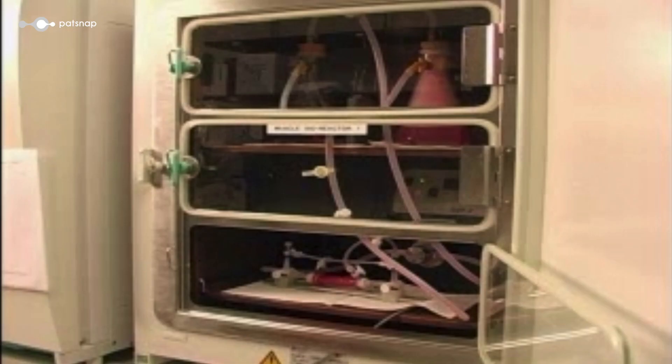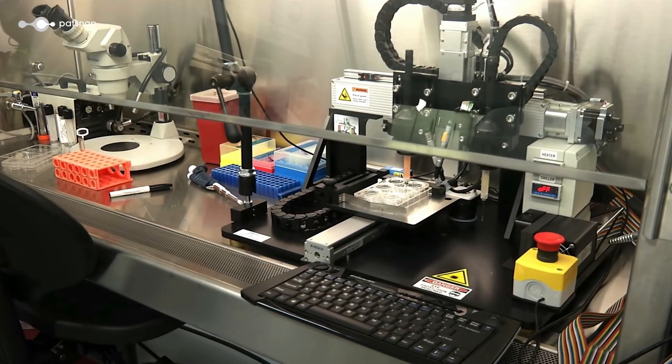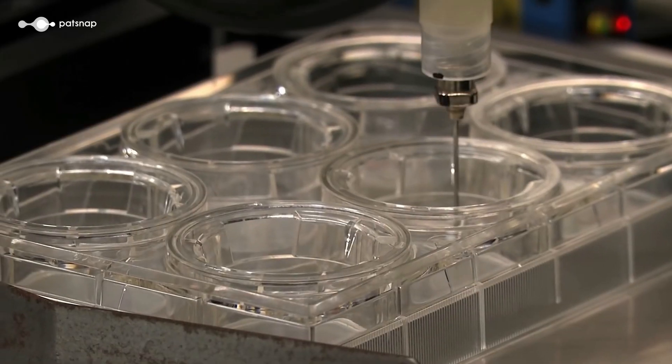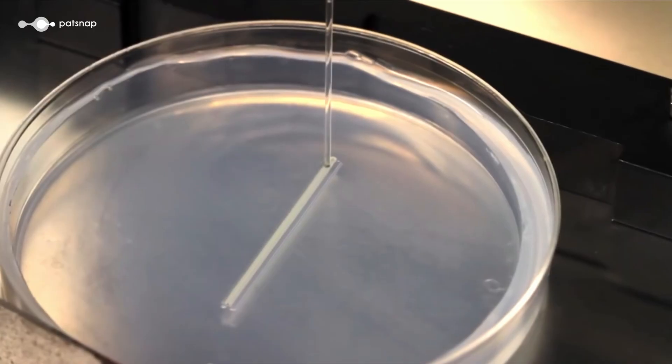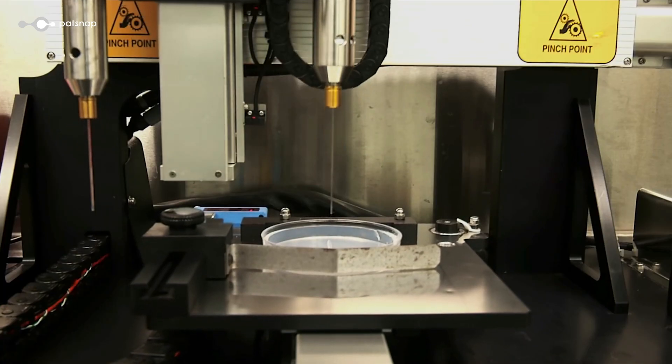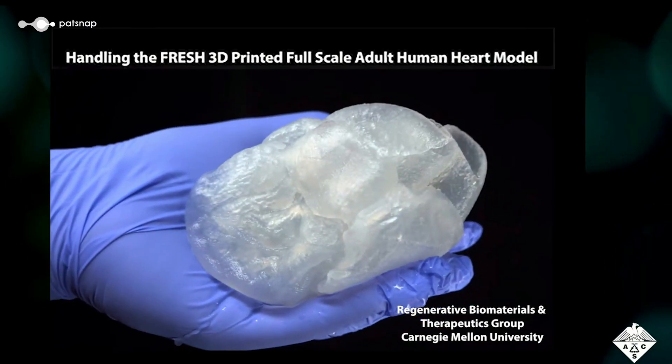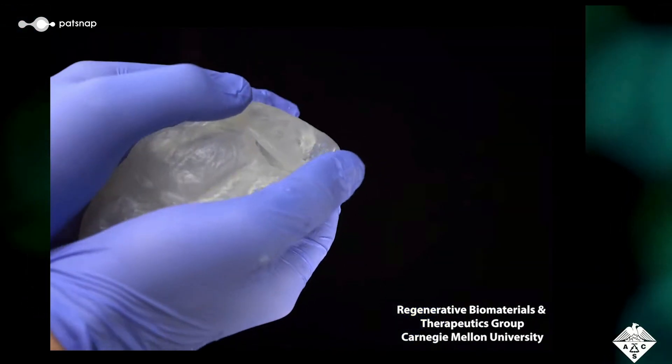Over the next decade, researchers around the world began to make significant progress. In 2010, Organovo, a biotech company, unveiled the first commercially available bioprinter, called the Novagen MMX. This device allowed scientists to create functional blood vessels and other simple tissues. Since then, the field of bioprinting has continued to advance rapidly, with researchers making headlines for creating ever more complex structures, like miniature kidneys, and liver tissues, and recently, hearts.